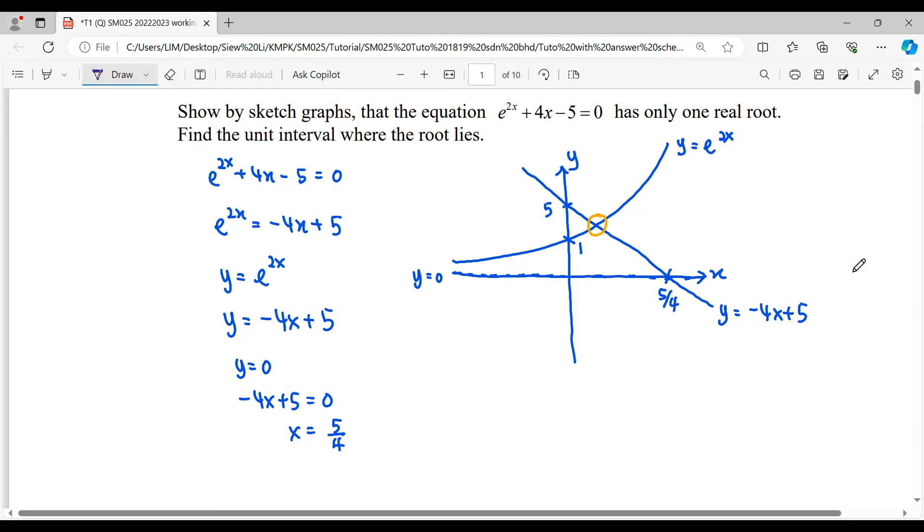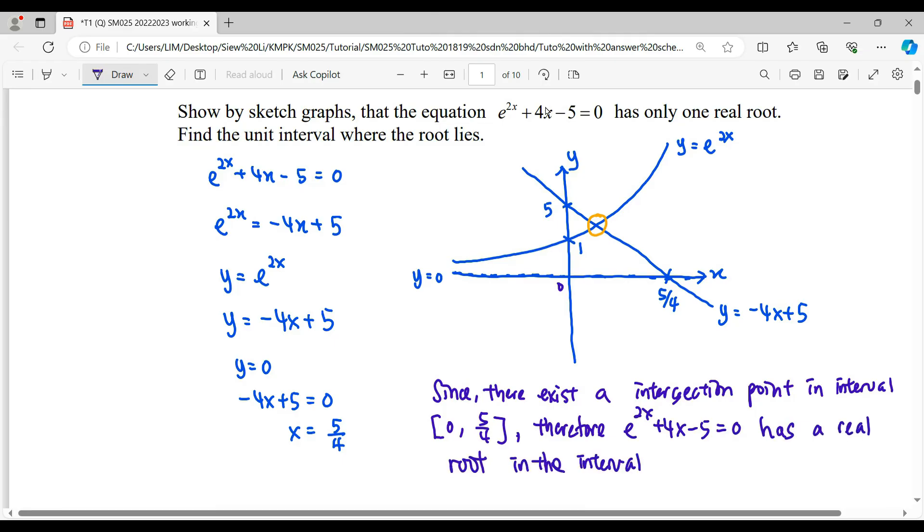This is how we use the graphical method to show the roots. We can see the x-axis intersection point is in the interval 0 to 5/4. Therefore we have shown that this nonlinear equation has a real root in the interval [0, 5/4].